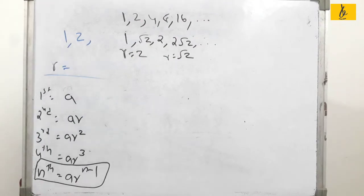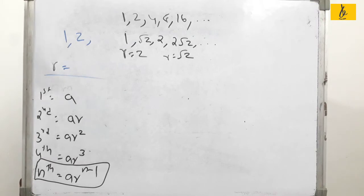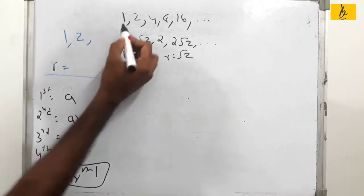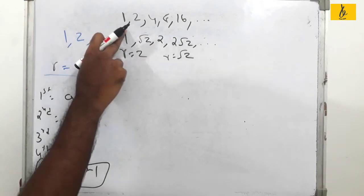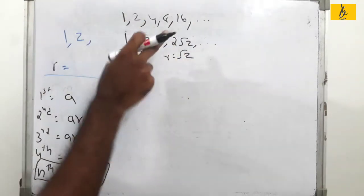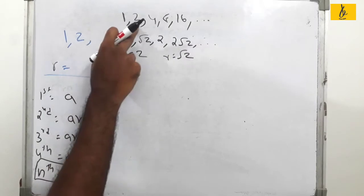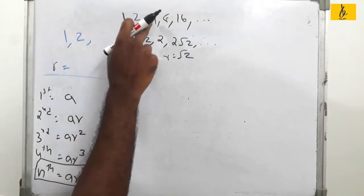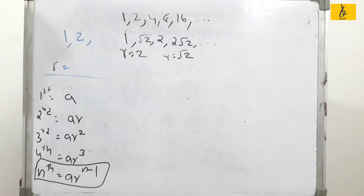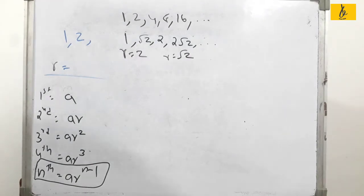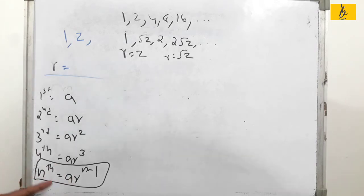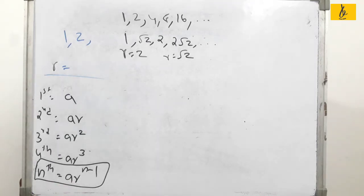What is Geometric Progression? If you have a definition, we will ask you to use a concept. This term divided by the previous term is a constant number — it's a common ratio. What is Geometric Progression? This term divided by the previous term is a common ratio.